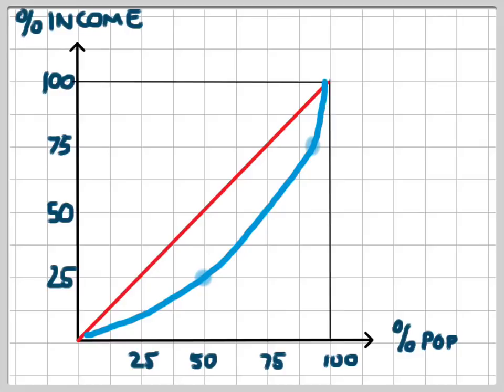The closer the Lorenz curve is to the line of perfect equality, the more equally distributed the income is in that economy.